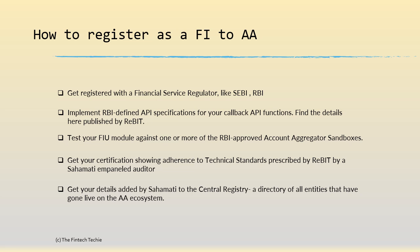To register as an FI, the first important step is to get regulated — either by SEBI or RBI. Once you do that, you have to implement RBI's API specification and all the callback functions. You will then need to use the account aggregator's sandbox — for example, using Anumati as the account aggregator to test with their sandbox APIs. Once done, you will receive a certificate from a Sahamati-empowered auditor and can then hook on to the registry and go live on the AA ecosystem.